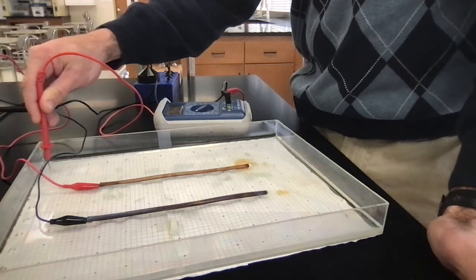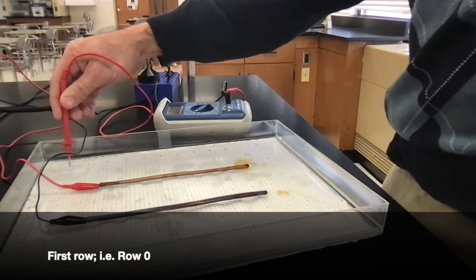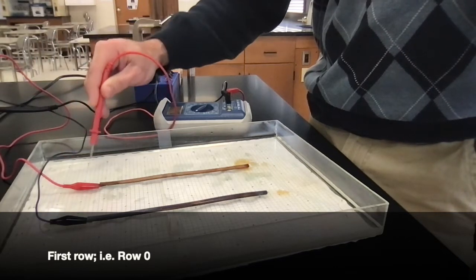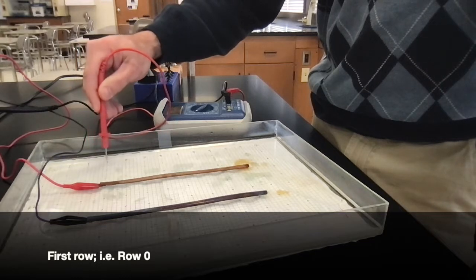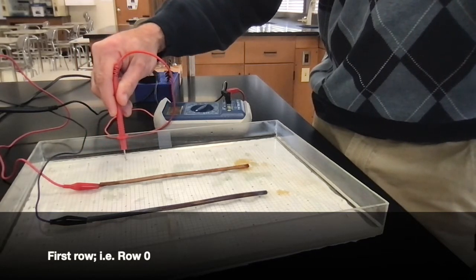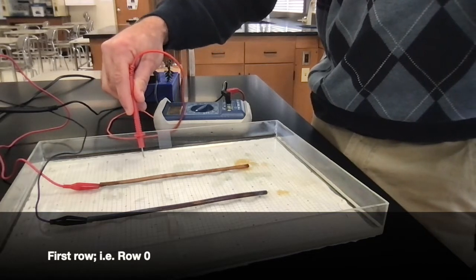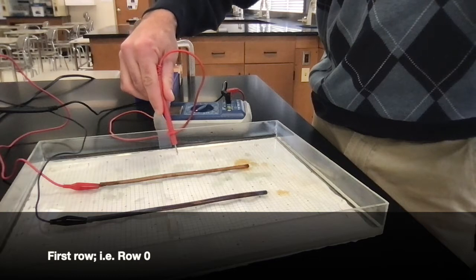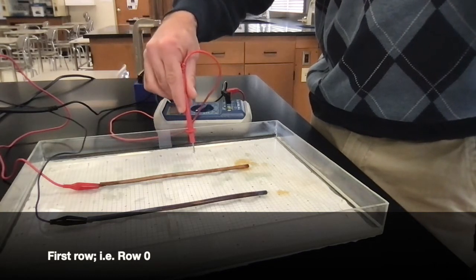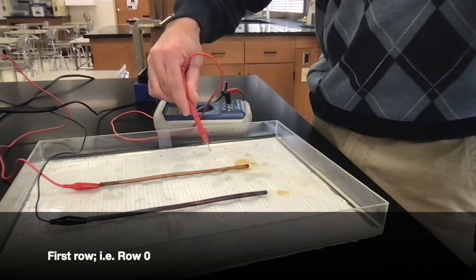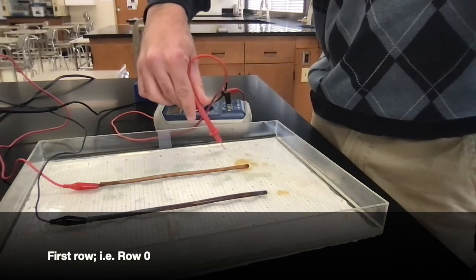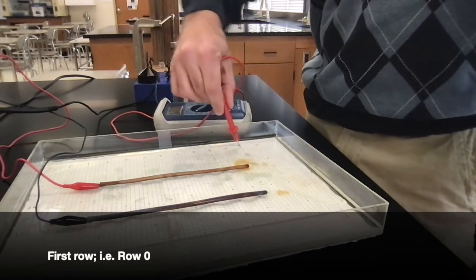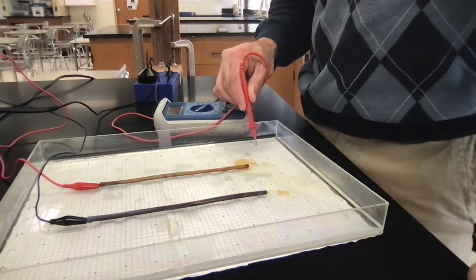Row 0: position 0.0 has a reading of 8, 1.0 is 8.3, 2.0 is 8.6, 3.0 is 8.9, 4.0 is 9.1, 5.0 is 9.3, 6.0 is 9.5, 7.0 is 9.3, 8.0 is 9.3, 9.0 is 9.1, 10.0 is 8.9, 11.0 is 8.7, 12.0 is 8.4.